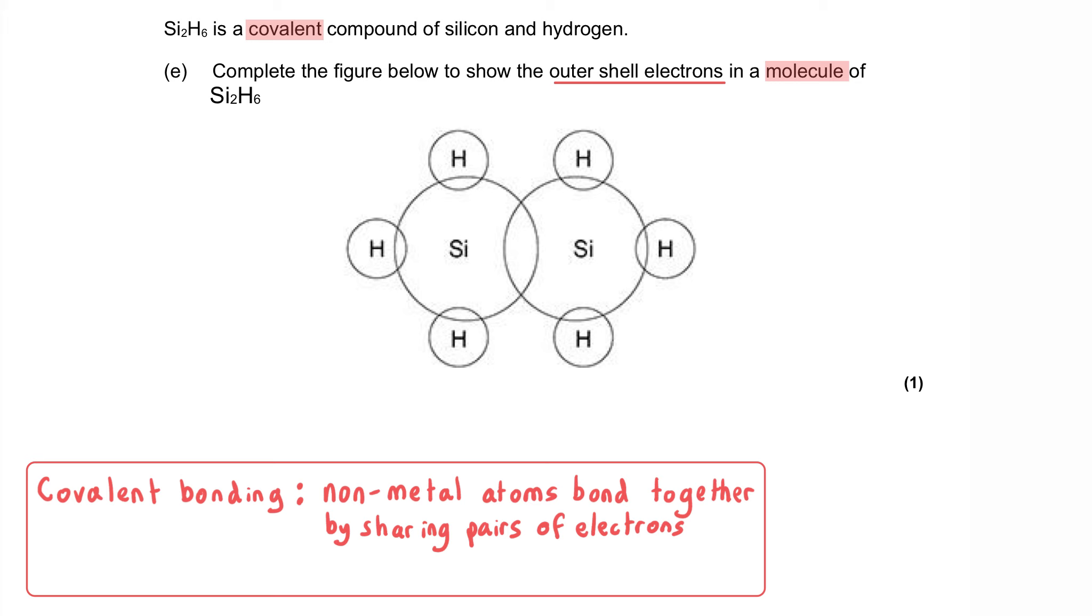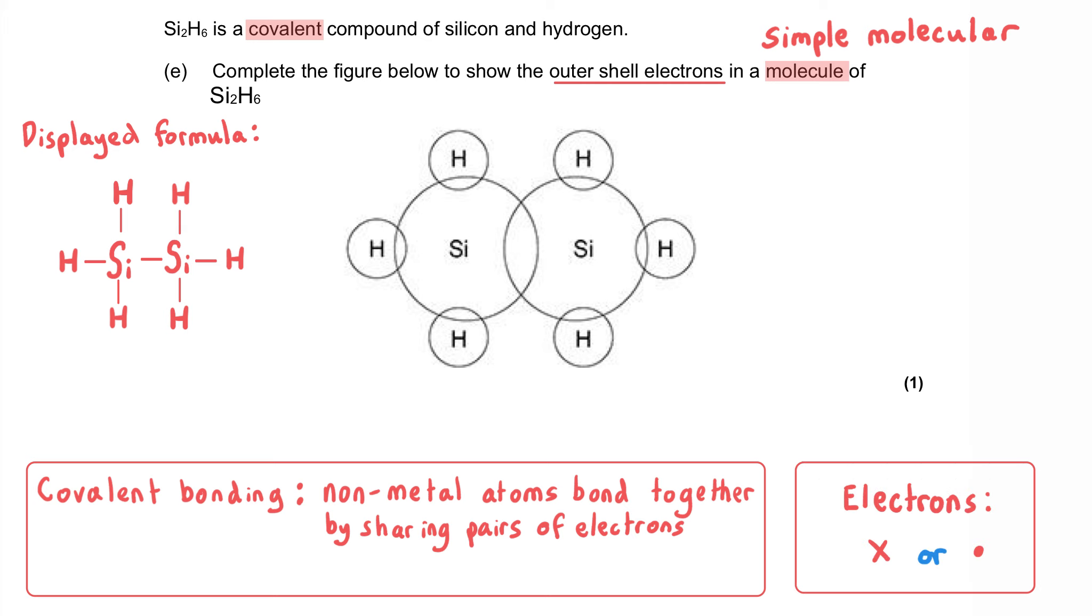Covalent bonding occurs when non-metal atoms bond together by sharing pairs of electrons. And this produces a type of structure referred to as simple molecular. And the particles in this structure are molecules. These can be represented as a displayed formula like I'm showing here, where the lines are representing a covalent bond. Or as dot and cross diagrams, which is what we've been requested to show here.